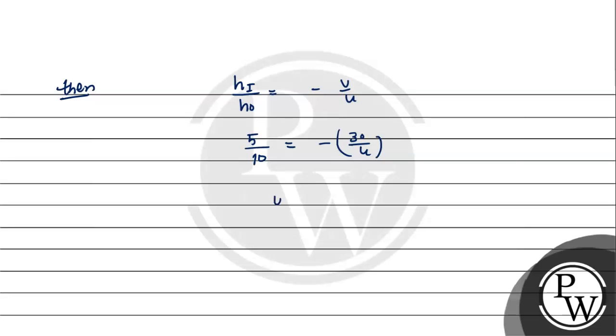U equals minus 30 into 10 upon 5. So U is minus 60 cm. U is the distance of object from the pole.